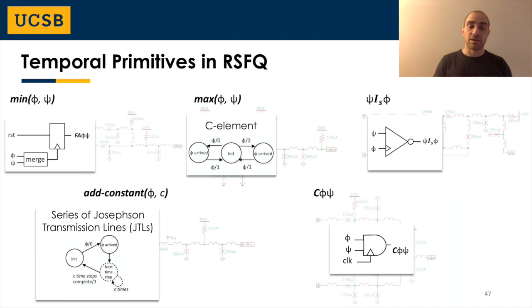In the case of min, a merge component and a D flip flop are used. In the case of max, a C element is used. The C element consists of two SQUIDs and is not going to fire until pulses have arrived to both of its input ports. For the implementation of inhibit, a synchronous inverter is used, but now the clock signal has been repurposed. For the constant addition, we have a series of Josephson transmission lines. A Josephson transmission line is used for interconnection in superconducting, but also introduces a constant delay. Finally, for the realization of coincidence, which is supposed to fire only when two pulses arrive at the same time, a synchronous AND gate is used.